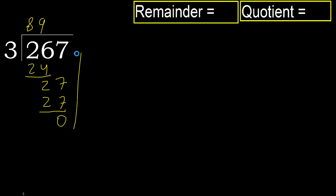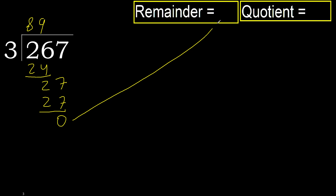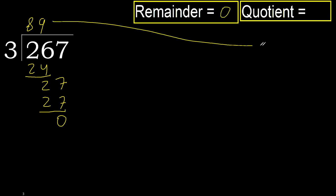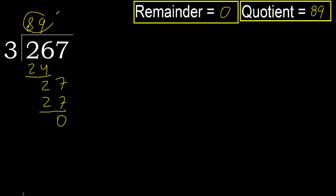Next, there is no remaining number, therefore we finish. 267 divided by 3 is 89.